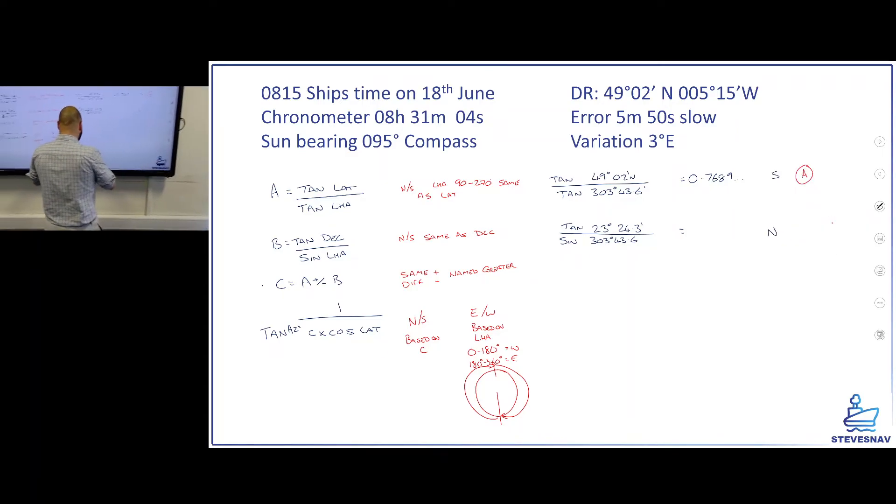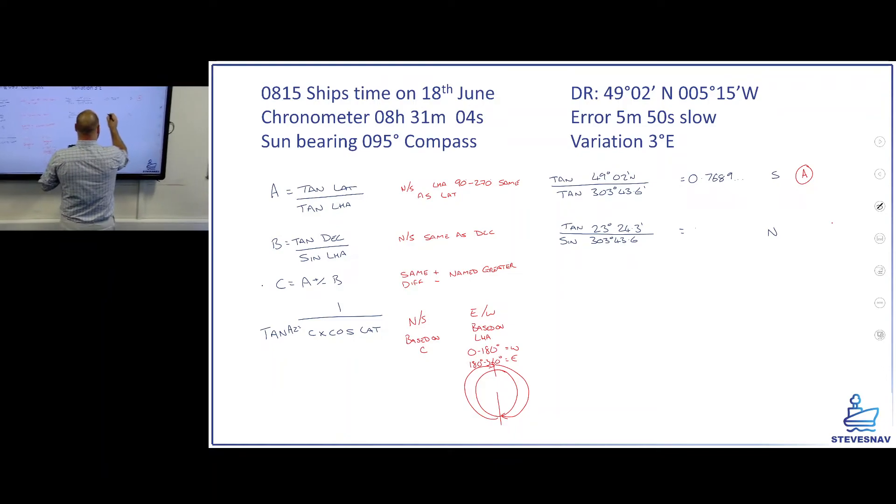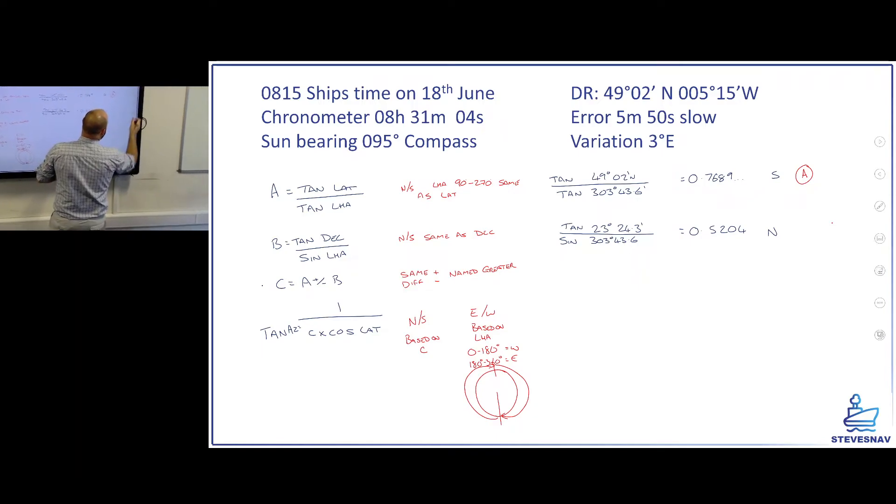So B, tan 23 degrees 24.3 minutes divided by sine of the LHA 303 degrees 43.6 minutes equals 0.5204. And that one's north, and I'm going to save that as B in my calculator.